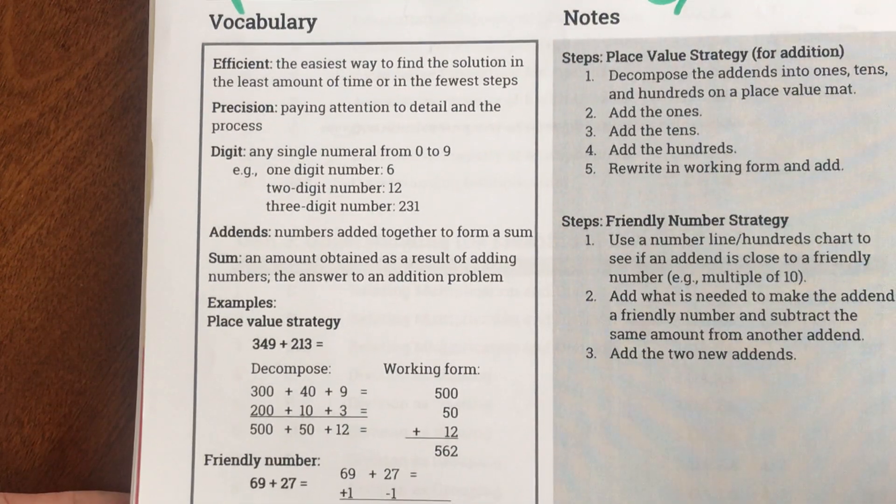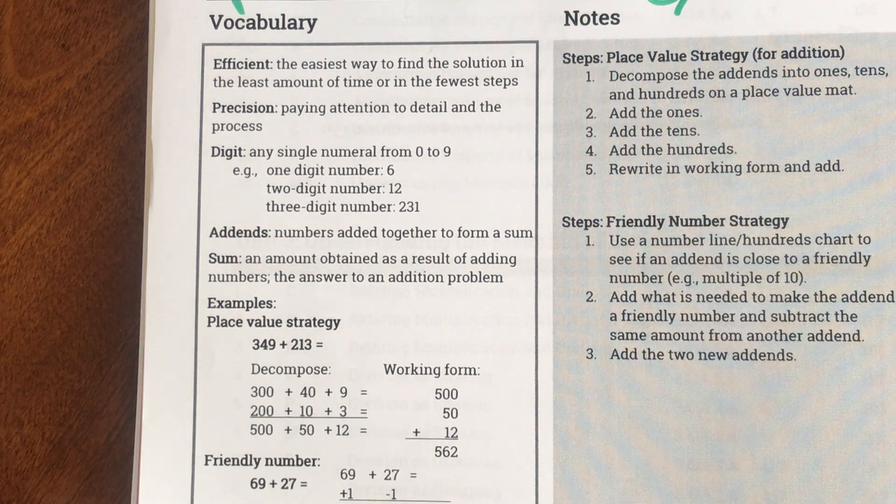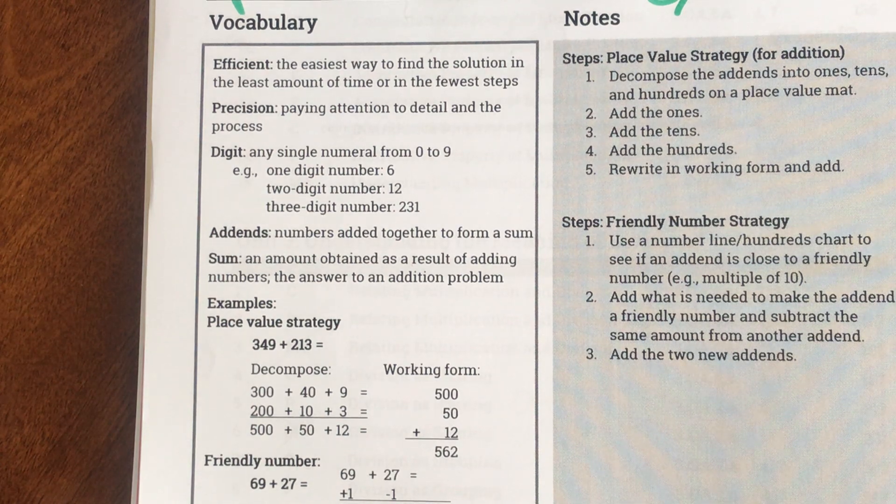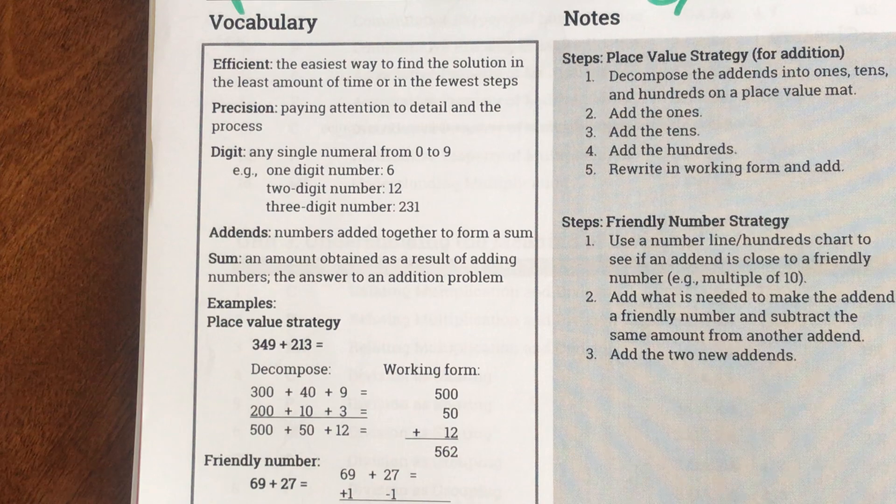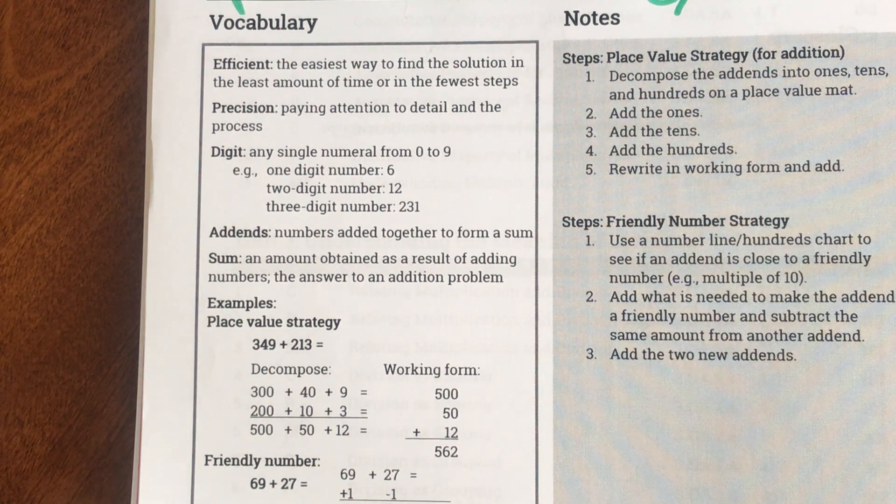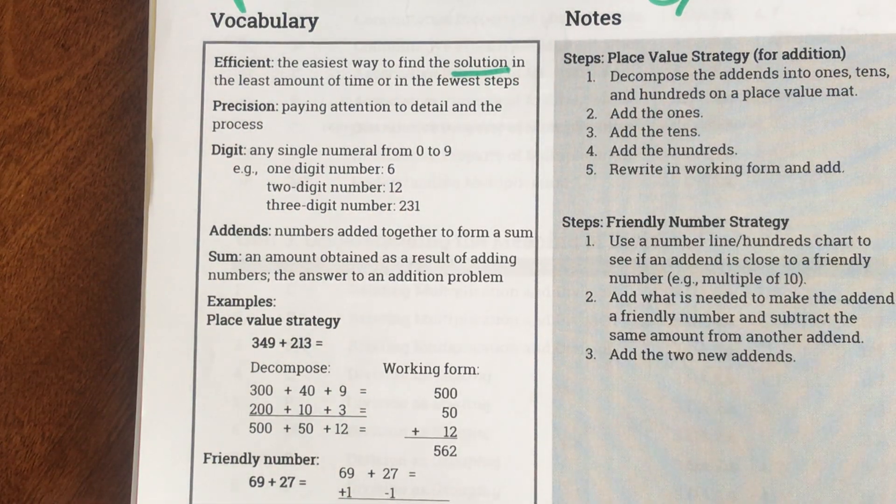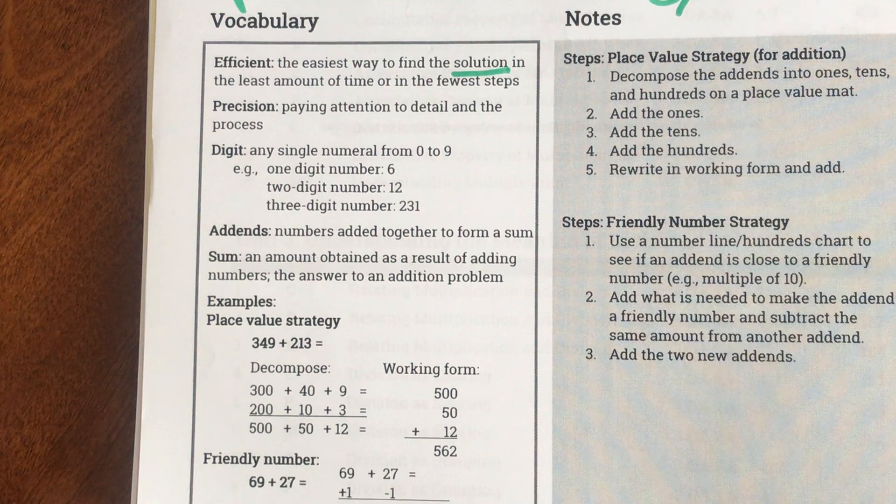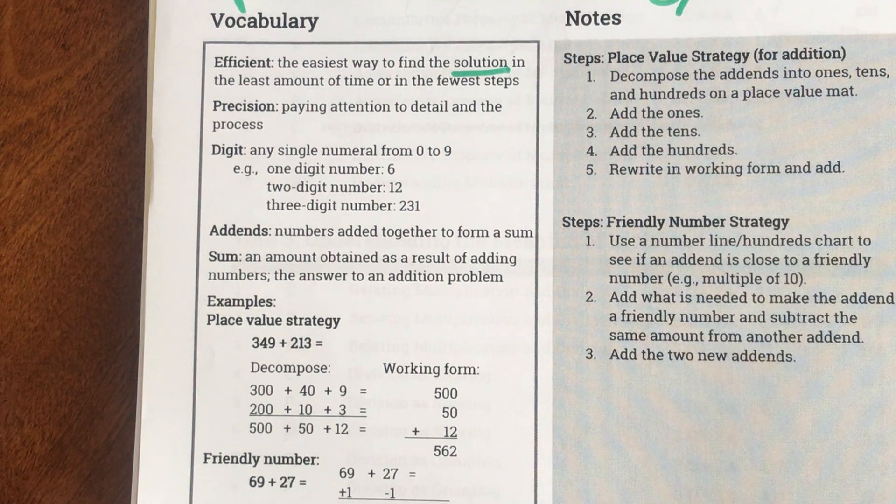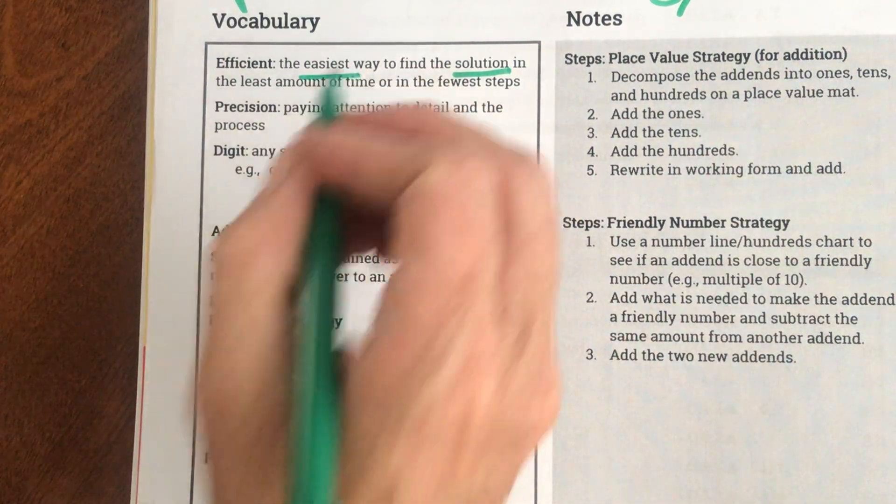Let's first look at our vocabulary. So the first thing says efficient. Efficient is a really big word in math. It says the easiest way to find the solution in the least amount of time or in the fewest steps. So some key words there are you find the solution, not just taking some guess. So to be efficient you want to find the solution but you want to find it the easiest way.